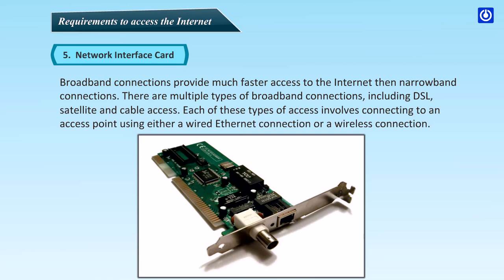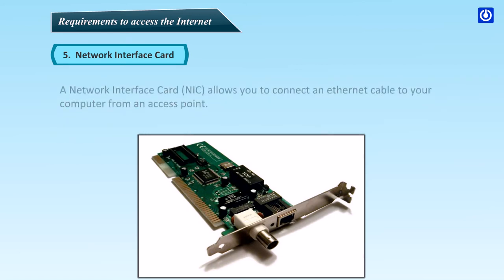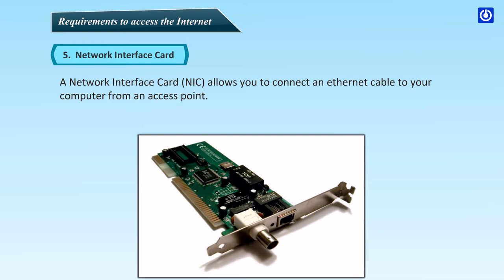Network Interface Card: Broadband connections provide much faster access to the Internet than narrowband connections. There are multiple types of broadband connections, including DSL, satellite, and cable access. Each of these types of access involves connecting to an access point using either a wired Ethernet connection or a wireless connection. A Network Interface Card (NIC) allows you to connect an Ethernet cable to your computer from an access point.